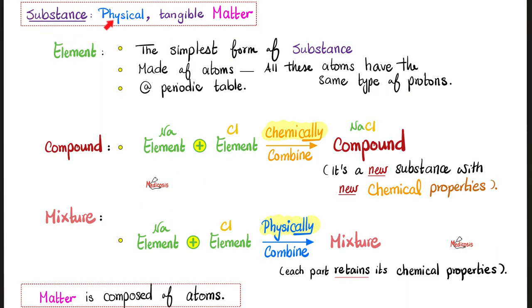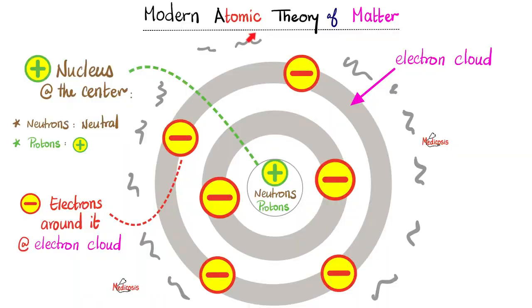What's a substance? It's a physical, tangible matter. What's an element? The simplest form of substance, like the elements that we see in the periodic table. They are made of atoms. Sodium as an element is only made of sodium atoms. According to the atomic theory, matter is composed of atoms.